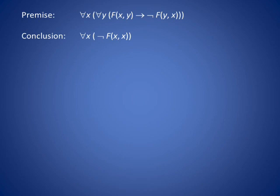Let's begin by looking at the conclusion, which says that for all X, F of X and X is false. How do we get that from the premise? The premise involves an implication, and in that form, it's hard to see the conclusion coming from the implication.